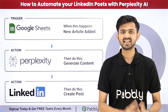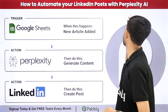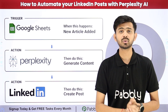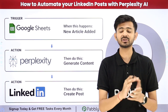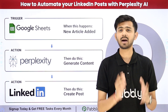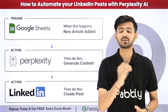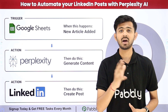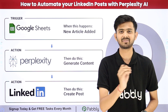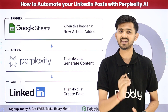Hello everyone, welcome back to Pabbly. Today our topic is how to automate your LinkedIn posts with Perplexity AI. I regularly post on my LinkedIn account and I want to automate this with the help of Perplexity AI. In my Google Sheet I'll add article links and titles, then automatically summarize those articles and create LinkedIn post content using Perplexity AI, and then automatically create a new post on LinkedIn.